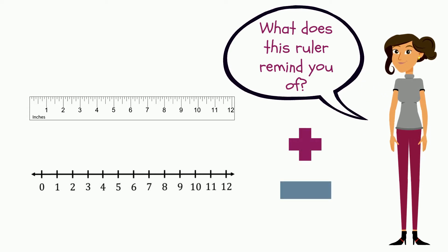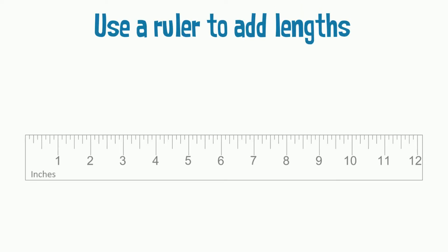I can use a ruler to add the lengths of objects. For example, if I had a pencil that was 4 inches long and a pencil that was 5 inches long, I could put them end to end to see that both pencils are 9 inches long.